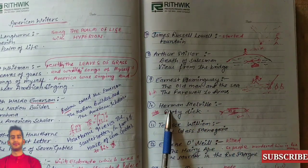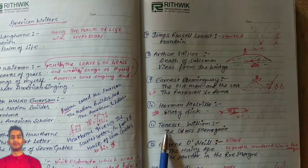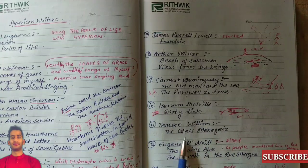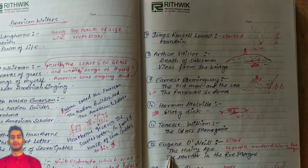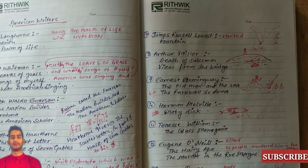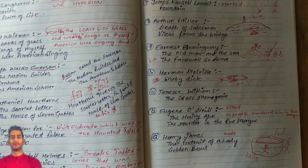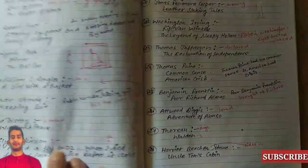Herman Melville's important work is Moby Dick. Tennessee Williams: The Glass Menagerie. Eugene O'Neill: The Hairy Ape and Mourning Becomes Electra. Henry James: The Portrait of a Lady and The Golden Bowl.